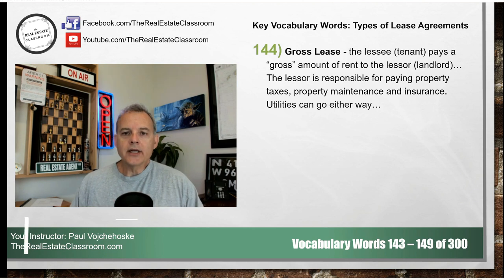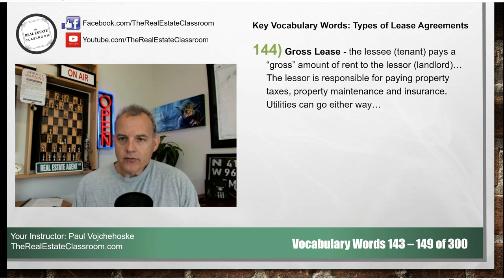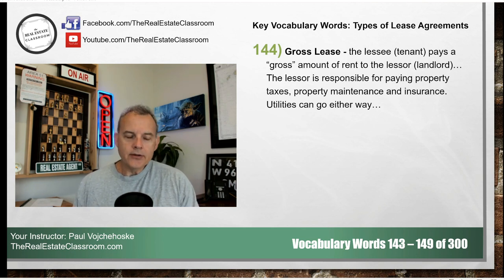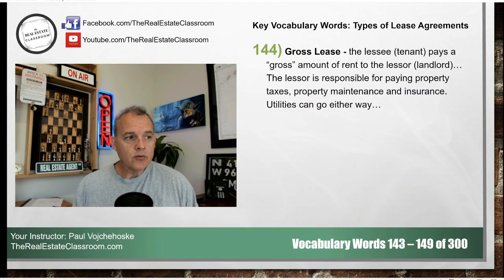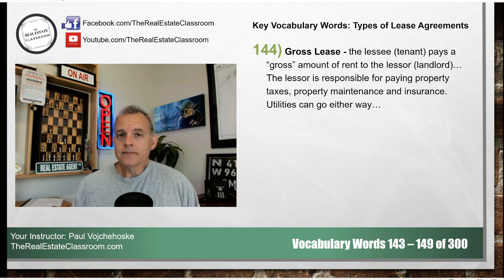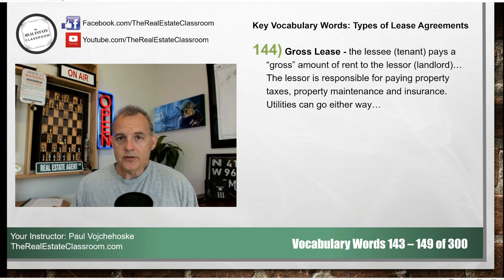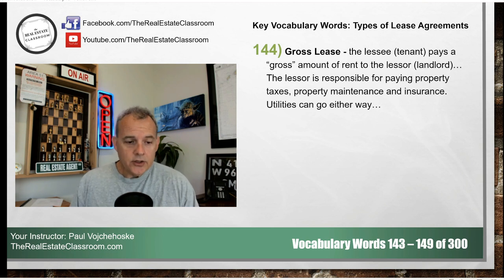Number 144 is a gross lease. This is where the tenant or lessee pays a gross amount of rent to the lessor, which is the landlord. The lessor is responsible for paying the property taxes, property maintenance, and property insurance. Utilities can be negotiated either way. We typically see this in residential apartment leases or a residential lease where the tenant is renting out a single family home. The tenant pays the landlord a monthly rent, and the landlord is responsible for property maintenance, insurance, and taxes, with utilities negotiated within the lease agreement.